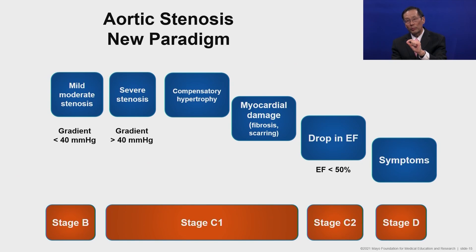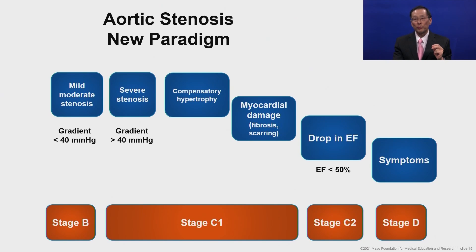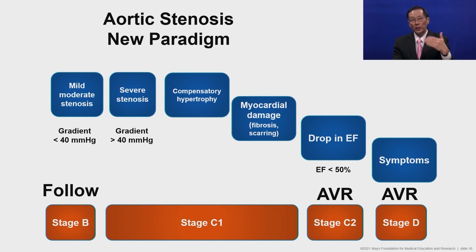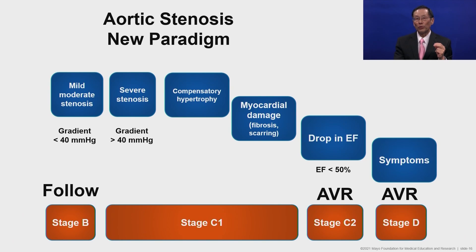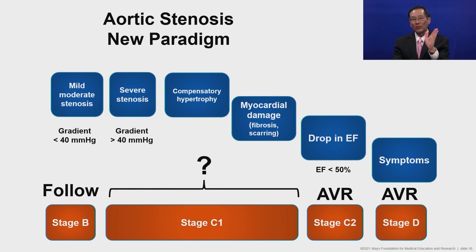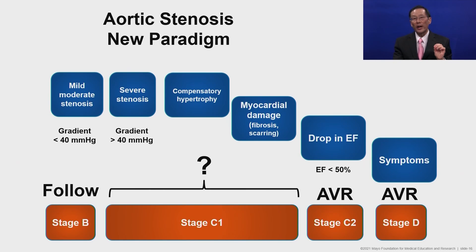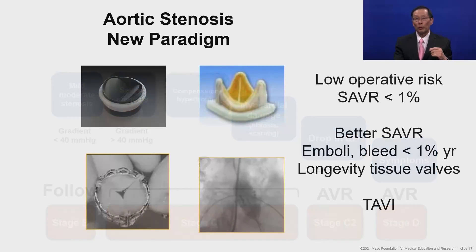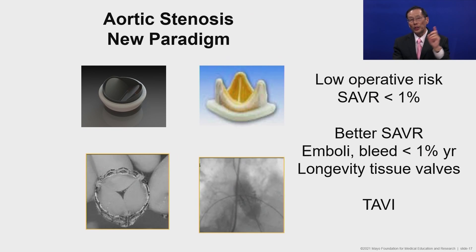Stage C2 is when patients still remain asymptomatic and have severe stenosis, but their ejection fraction starts to drop. Stage D is when they start to develop symptoms. Traditionally, we would follow patients in stage B, intervene at stage C2, and definitely intervene at stage D. Stage C1 patients have severe stenosis, remain asymptomatic, and their ejection fraction — the way we assess systolic function — remains normal. The new paradigm changes the risk calculus for this group.